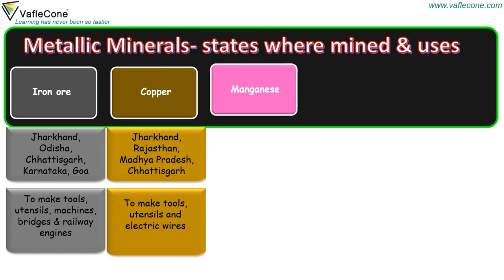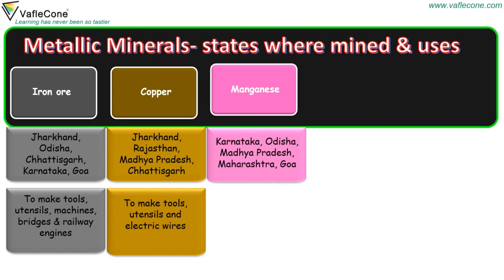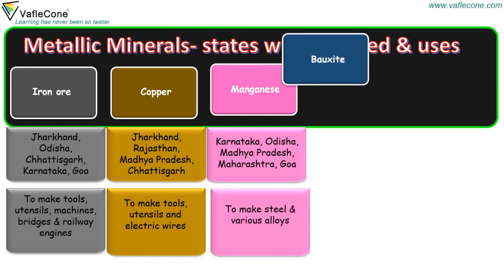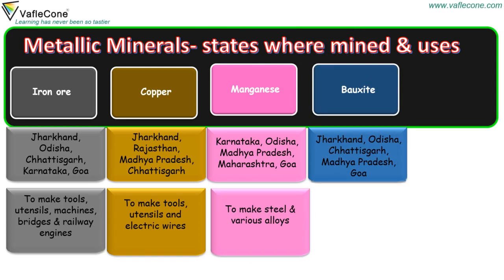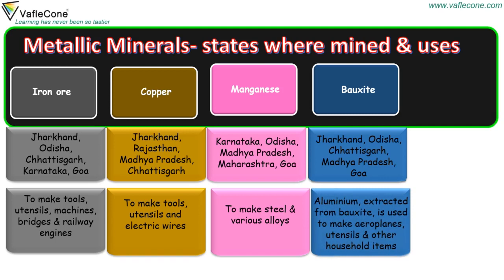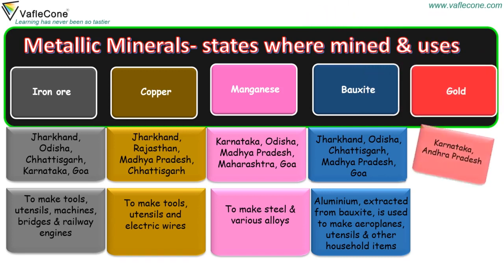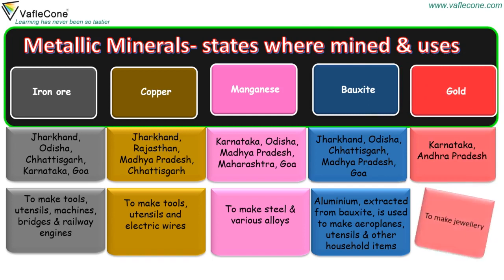Manganese is found in Karnataka, Odisha, Madhya Pradesh, Maharashtra and Goa. It is used to make steel and various alloys. Bauxite is found in Jharkhand, Odisha, Chhattisgarh, Madhya Pradesh and Goa. Aluminium extracted from bauxite is used to make aeroplanes, utensils and other household items. Gold is found in Karnataka and Andhra Pradesh, and it is used to make jewelry.